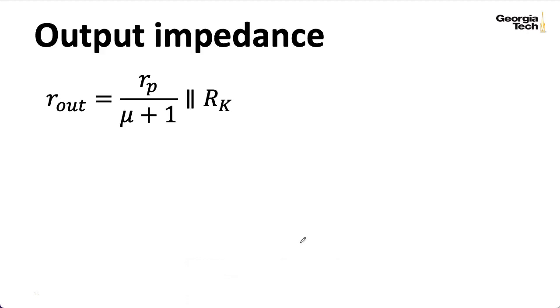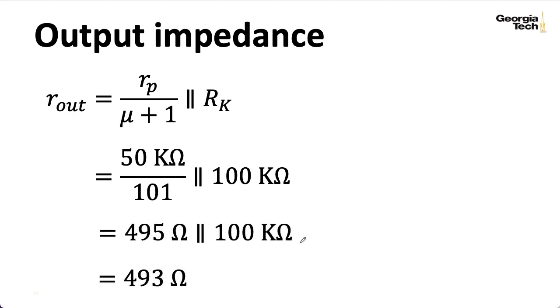Now, as far as output impedance goes, if I plug in these numbers, I wind up with something like 493 ohms, which is pretty low. But, again, if I got rp wrong, it's a difference between one low number and some other not-quite-as-low number, but pretty low number. So, regardless of whatever problems I had in my analysis, the basic lesson of getting a low output impedance is still going to hold.